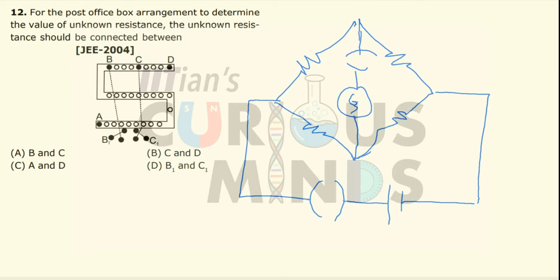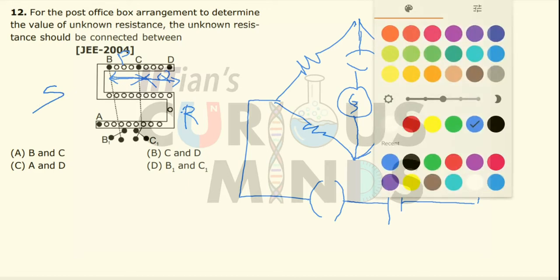Between B and C there is known resistance equal to P. Between C and D there is another known resistance equal to Q. Between B and A there is another known resistance equal to R. The unknown resistance is S, which we do not know where to connect yet.